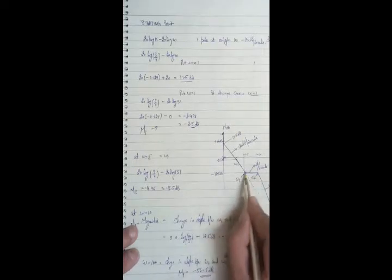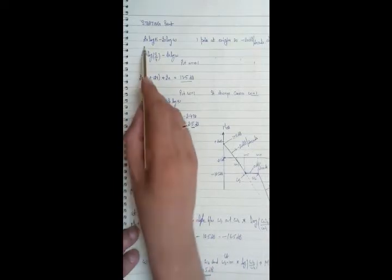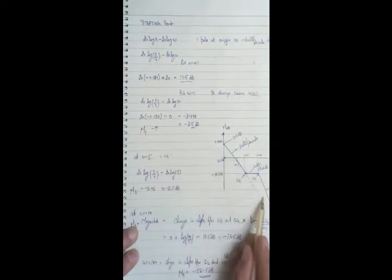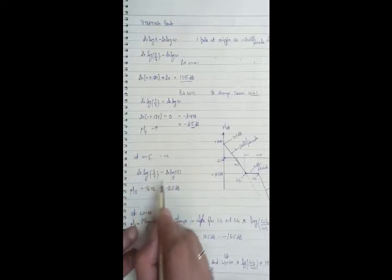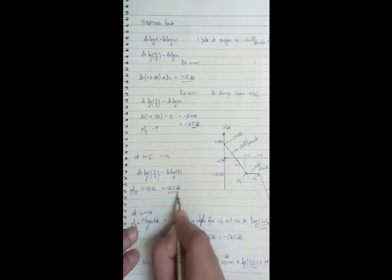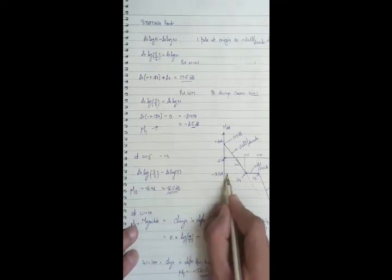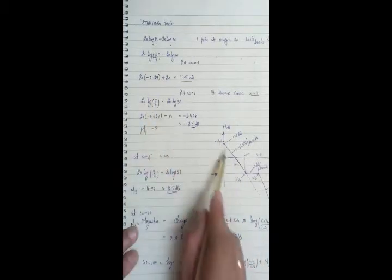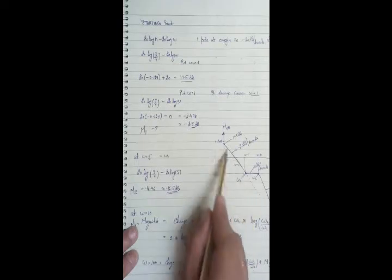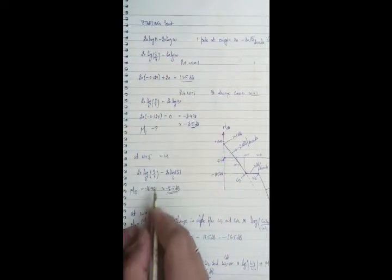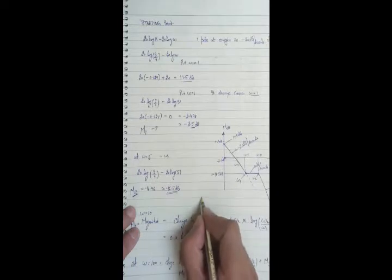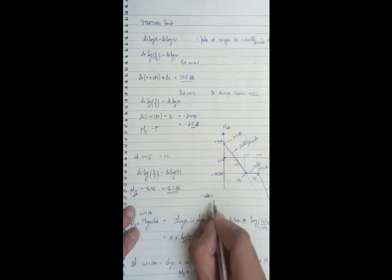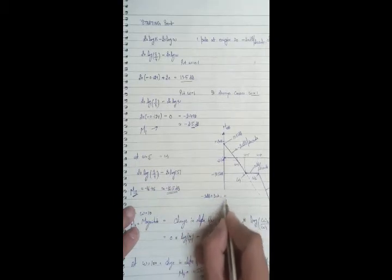The magnitude at ω = 5 can be calculated using the formula 20log(3/4) − 20log(5) ≈ −16.5 dB. This is the magnitude M2 at the first corner frequency. At ω1 = 5 there is a zero, which contributes +20 dB/decade. The previous slope was −20 dB/decade, so the slopes cancel and the new slope becomes 0 dB/decade.